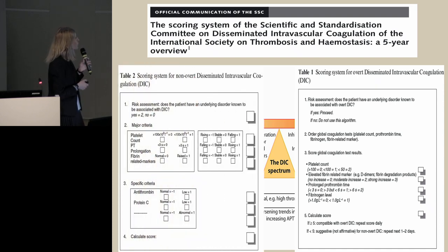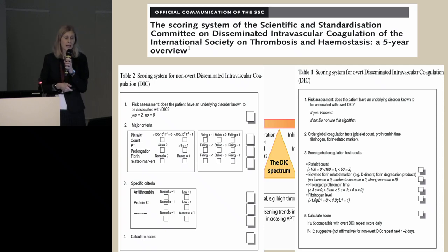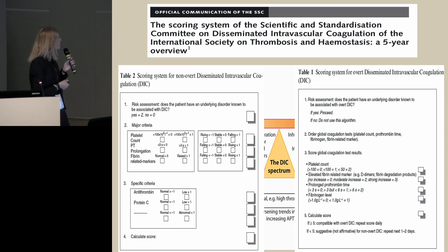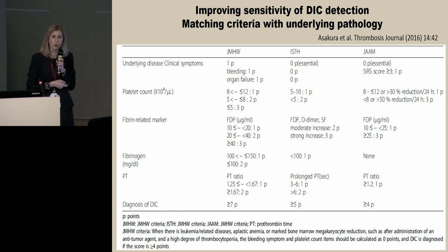The scoring system for non-overt DIC is more complicated to use, as it takes into account not only a single value of hemostatic markers but the trend over time. It also includes criteria measuring anticoagulant factors. Depending on the underlying pathology, it is very important to choose the right DIC scoring system.